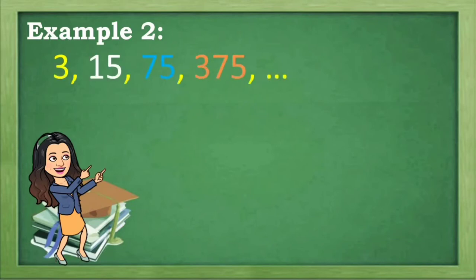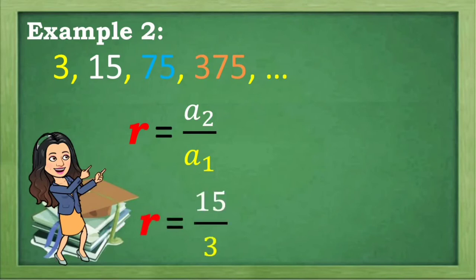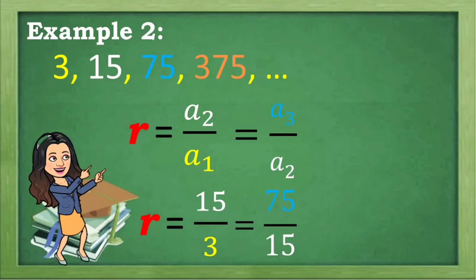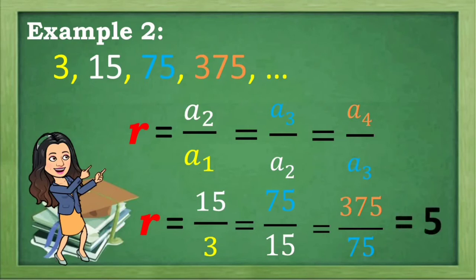Another example: 3, 15, 75, 375, and so on. Let's solve for R: A sub 2 divided by A sub 1. Our A sub 2 is 15 and A sub 1 is 3. What is 15 divided by 3? That is equal to 5. Let us have the quotient of the third term and second term: 75 divided by 15. Is that equal to 5? Yes. Fourth term divided by the third term: 375 divided by 75, that is equal to 5. Since all quotients equal 5, the common ratio is 5. Therefore, the given sequence is a geometric sequence.